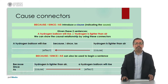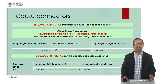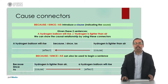These connectors can also come at the beginning of the sentence. Like in the example here: because, since, or as hydrogen is lighter than air — here we have the cause — a hydrogen balloon will rise — this is the effect. It is very important to know the exact location of the cause and effect and the connectors in technical English.